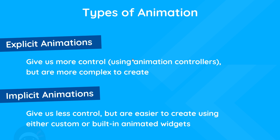Which of these two options you use really depends on the animation you're trying to make and how you prefer to structure your code. Generally, if the animation repeats over and over without stopping or requires granular control, we'd use an explicit animation with an animation controller; otherwise, we'd probably use an implicit animation. This is a generalization and there might be times when it doesn't apply.